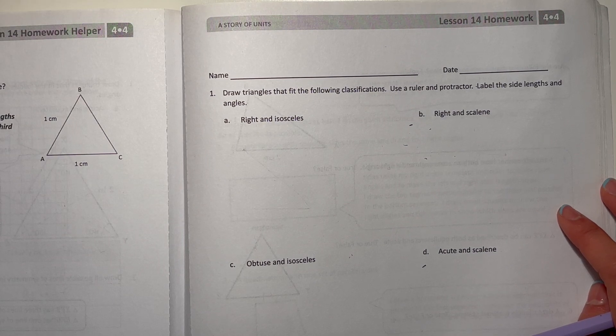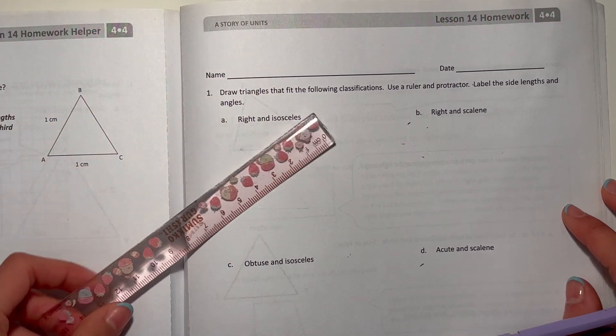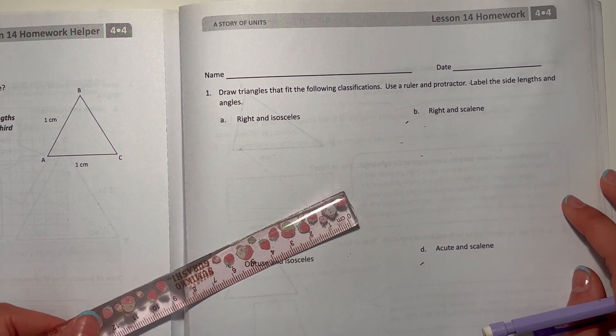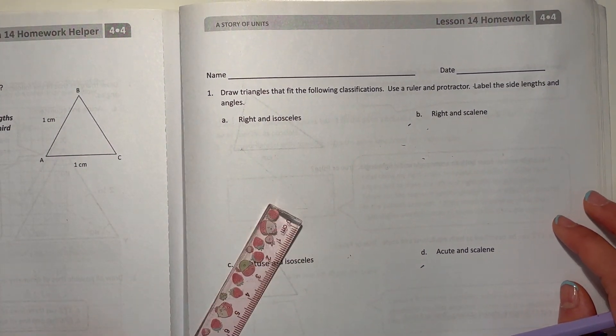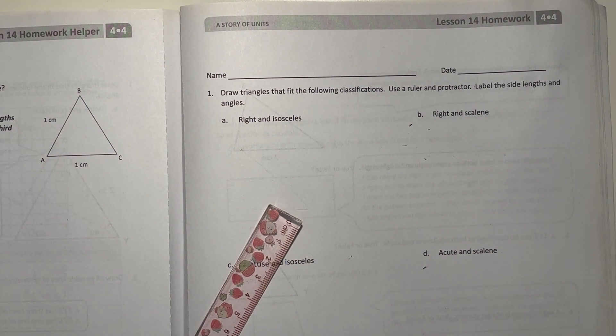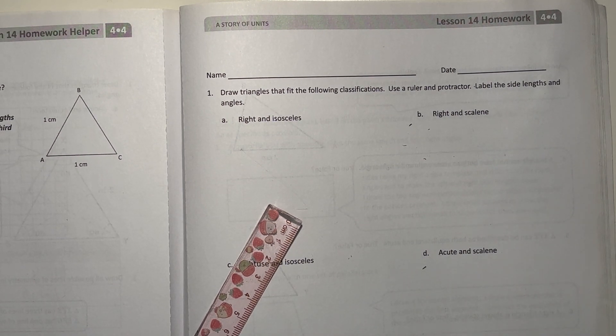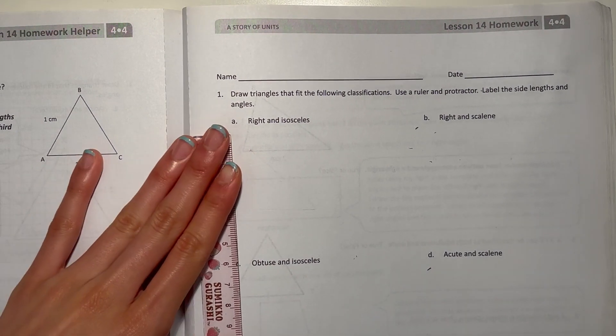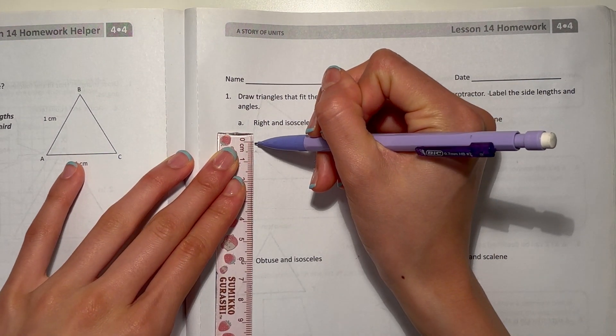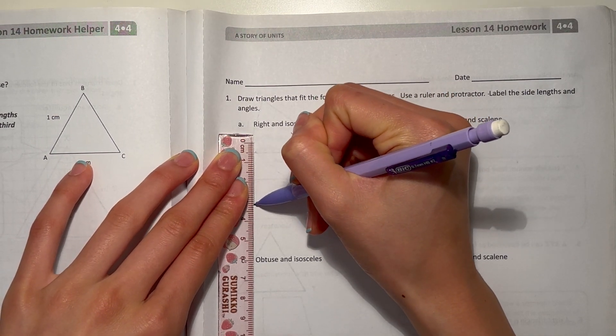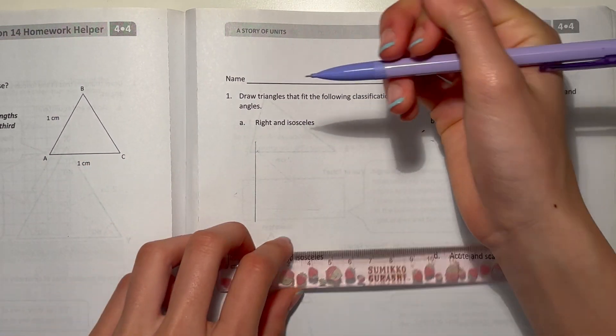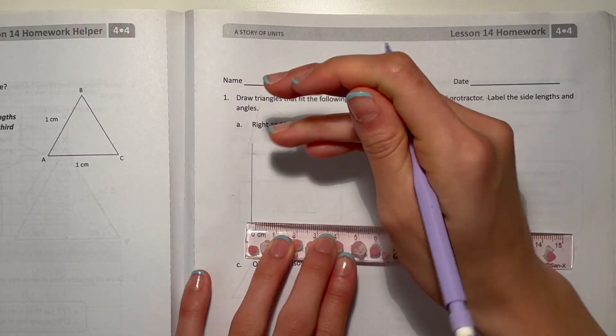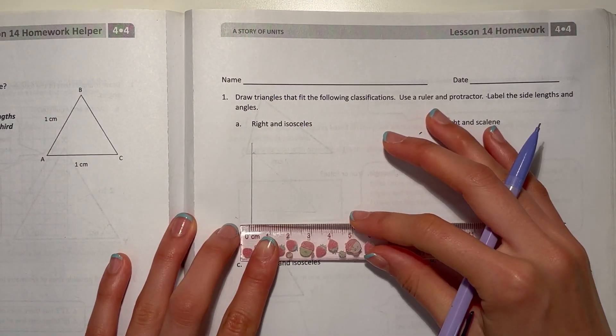All right, so I have this cute little pink ruler. Let's see, A: right and isosceles. So an isosceles triangle is a triangle that has two sides that are equal in length. Let's see, we can do three centimeters, or four. And here we have to make it equal to that line for the triangle to be isosceles.